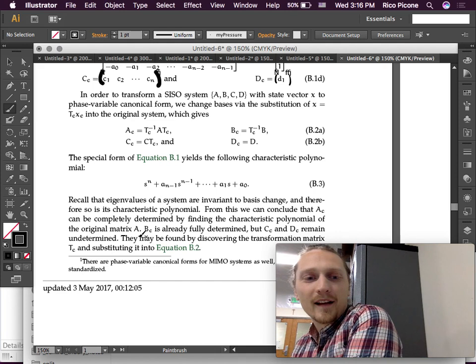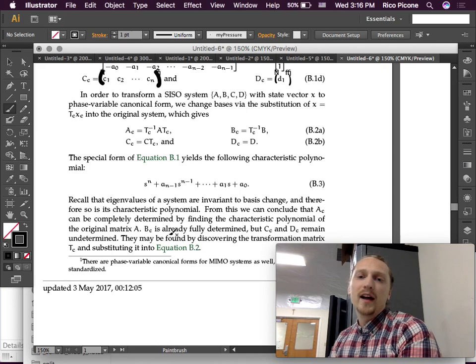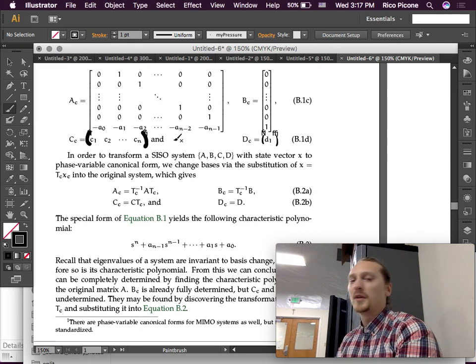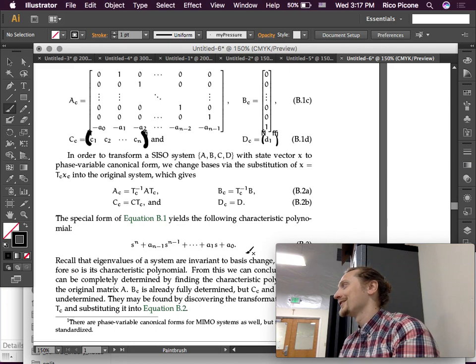From this, we can conclude that AC can be completely determined by finding the characteristic polynomial of the original matrix A. Because the characteristic polynomial is the same for any matrix. And, we also said that, when it's in this form, the characteristic polynomial is just these bottom row coefficients.